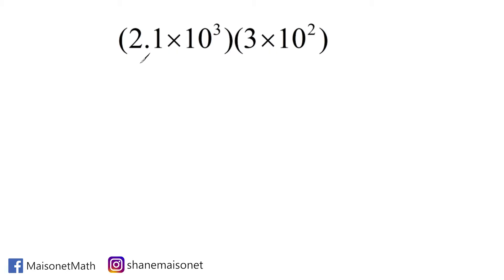So basically, we are multiplying one, two, three, four values together. Now, what we're going to do first is we are going to look at these base tens here. So what I'm going to do is just write one base ten here, and then what I'm going to do is take this exponent here and this exponent here and add them together.